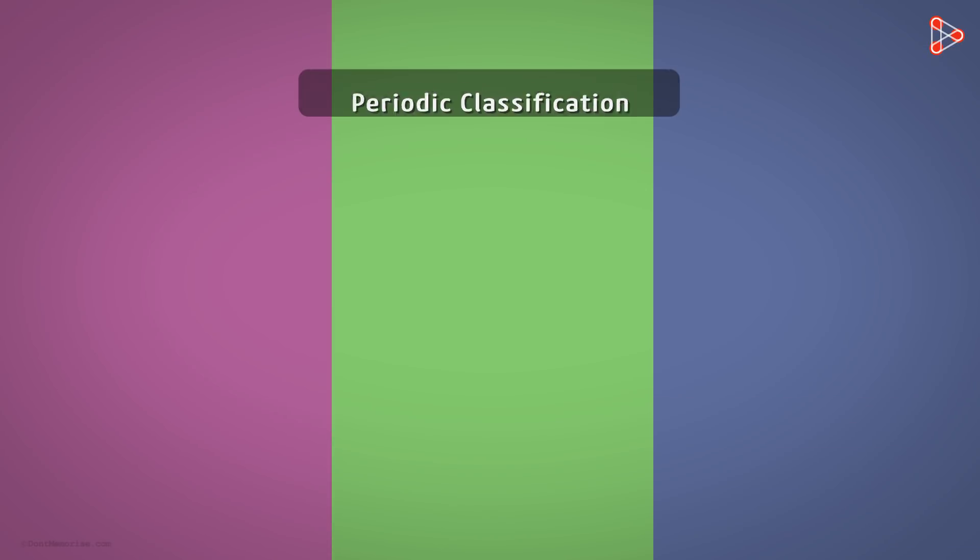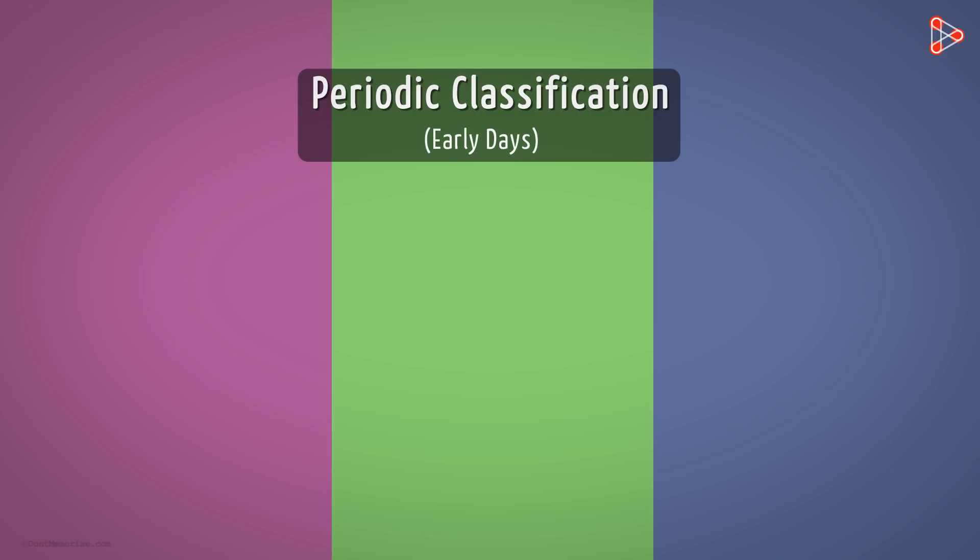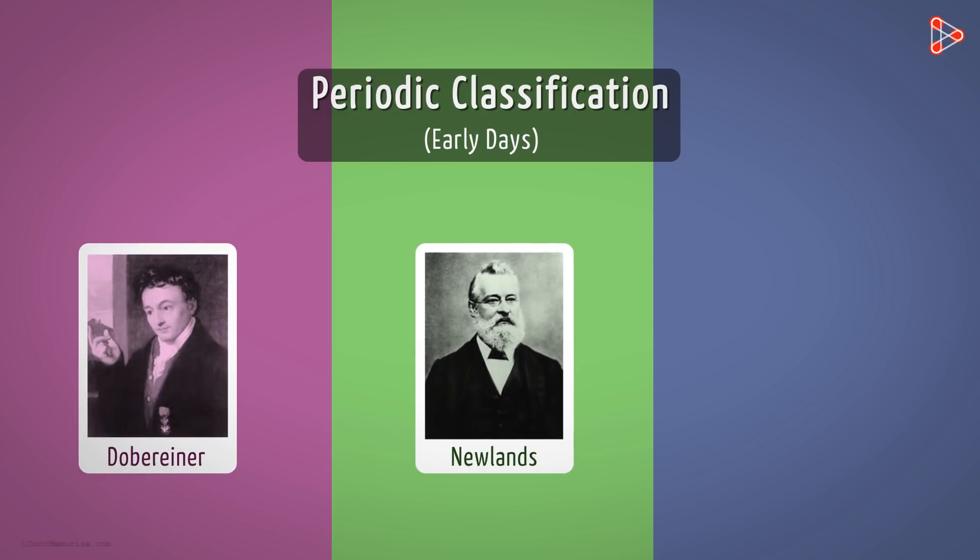Let's get to know how periodic classification was carried out in the early days of emerging chemistry when not many elements were known to people. In the upcoming videos, we will understand the various classification systems put forth by the different legendary personalities.